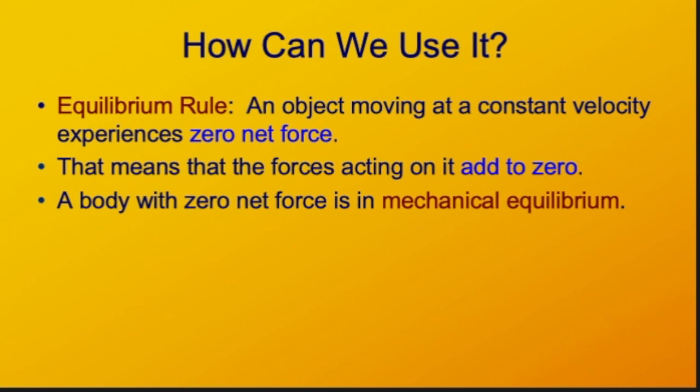Using it that way, we call the equilibrium rule. If there is a constant velocity, zero acceleration, then there is zero net force. From that, if we know that an object is in mechanical equilibrium, traveling at a constant velocity, then we know that all the forces add to zero.